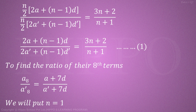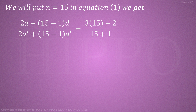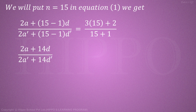We will put n = 15 in equation 1. We get: [2a + (15−1)d] / [2a' + (15−1)d'] = (3×15 + 2) / (15 + 1). Which implies [2a + 14d] / [2a' + 14d'] = 47 / 16.